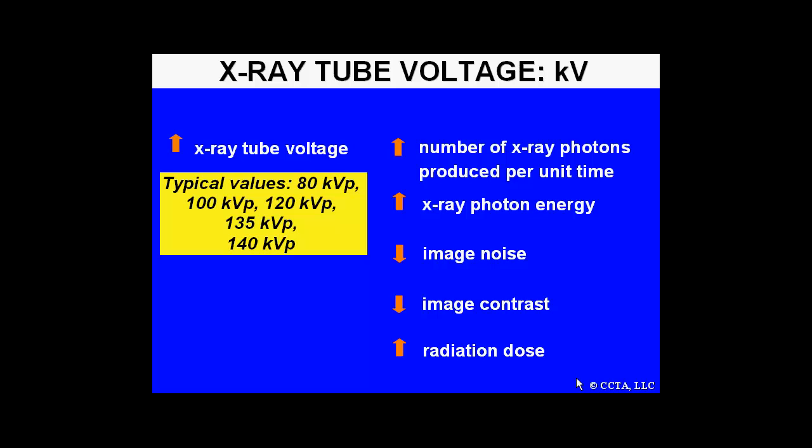The technologist sets up the scanner by first determining the x-ray tube voltage, KV or kilovolts. Typical values are 80, 100, 120, 135, and 140. Increasing the x-ray tube voltage will increase the number of x-ray photons produced per unit time and also increases x-ray photon energy. It does decrease image noise and decreases image contrast, but it also significantly increases radiation dose.